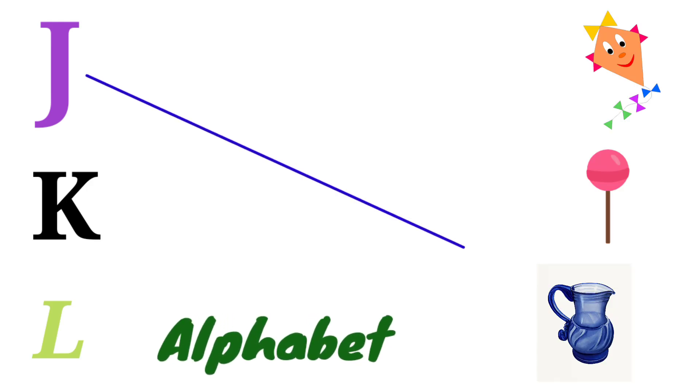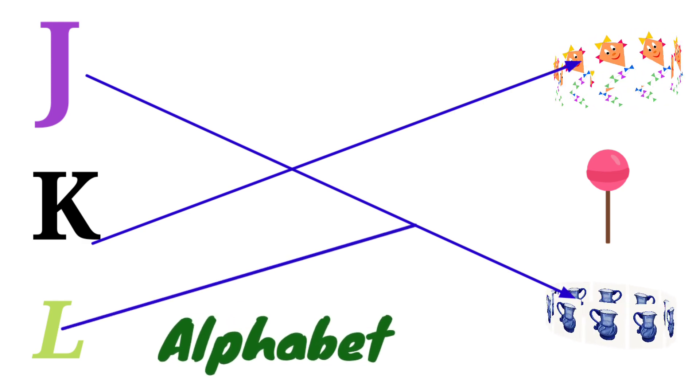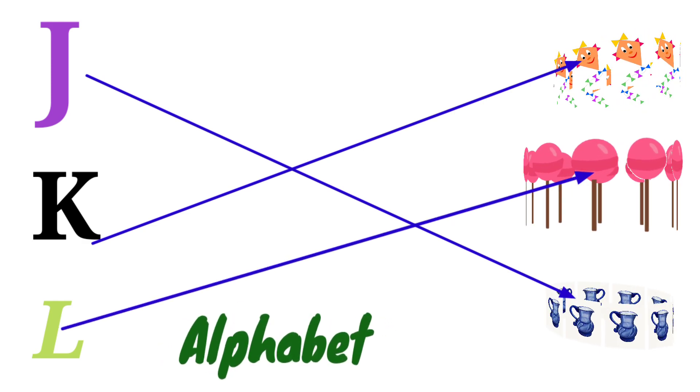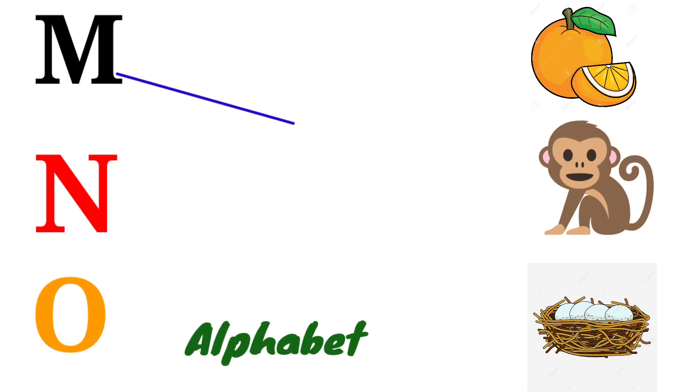J for Jacket, K for Kite, L for Lollipop, M for Monkey.